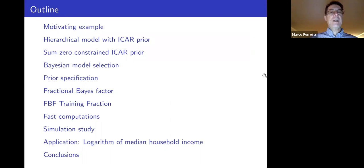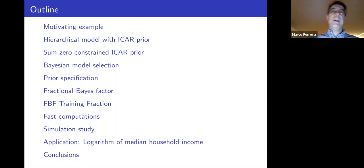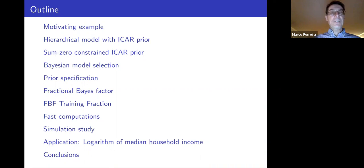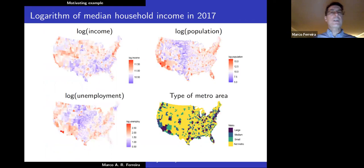Here is an outline with lots of points, so I'm going to go pretty fast. I'll start with a motivating example — the analysis of spatial data. Then I'll talk about the hierarchical model used for that spatial data, then about the Besag ICAR priors — specifically the sum-zero constrained ICAR priors. After that, Bayesian model selection, prior specification, fractional Bayes factor, training fraction, fast computations, simulation study results, and back to the application on logarithm of median household income, then conclusions.